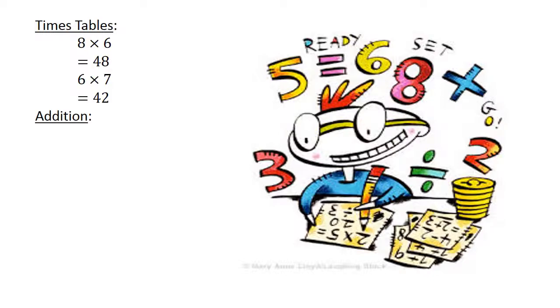Addition: 27 plus 55 equals 82. Subtraction: 36 minus 97 equals negative 61.